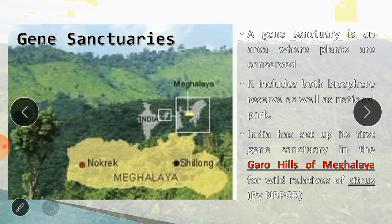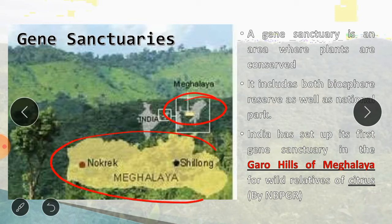The next form is biosphere reserves, which cover very large areas often more than 5000 square kilometers. In India, we currently have 18 notified biosphere reserves. The next is gene sanctuary — an area where plants are conserved, including both biosphere reserves and national parks. India has set up its first gene sanctuary in the Garo Hills of Meghalaya, which is a gene sanctuary for citrus species conserved by NBPGR.